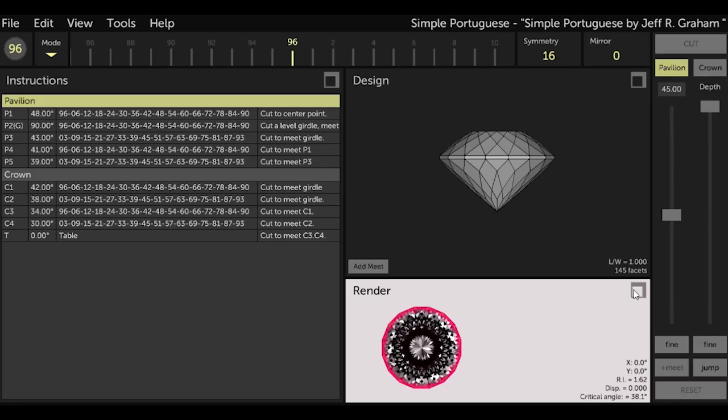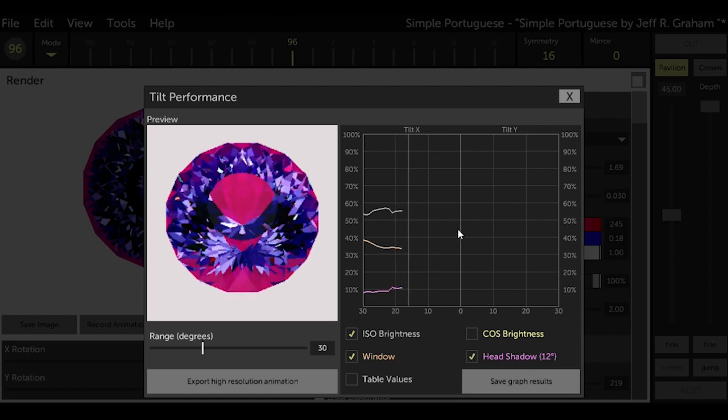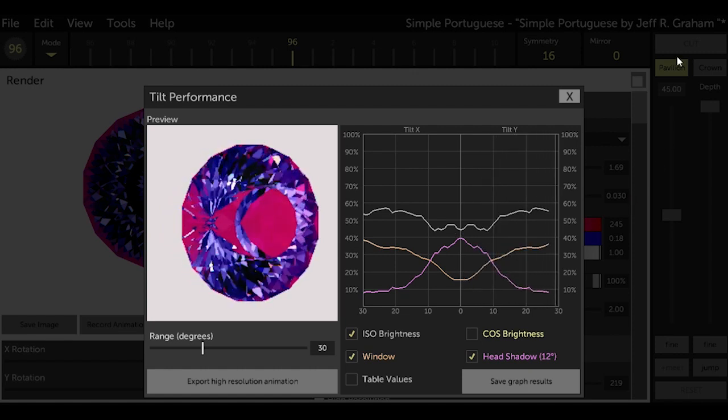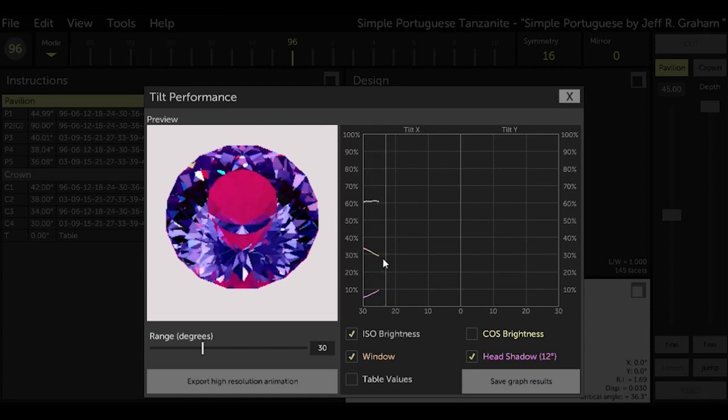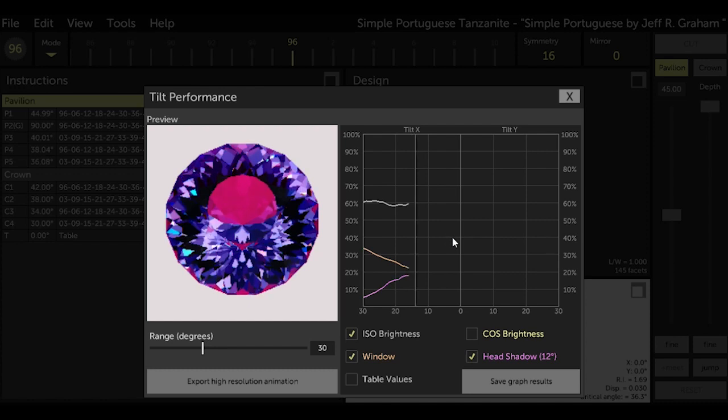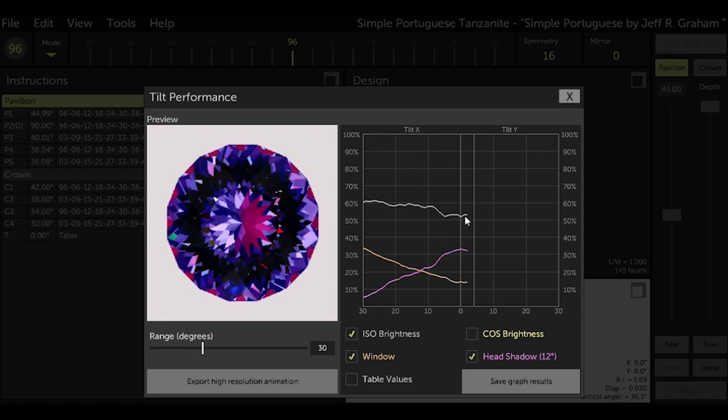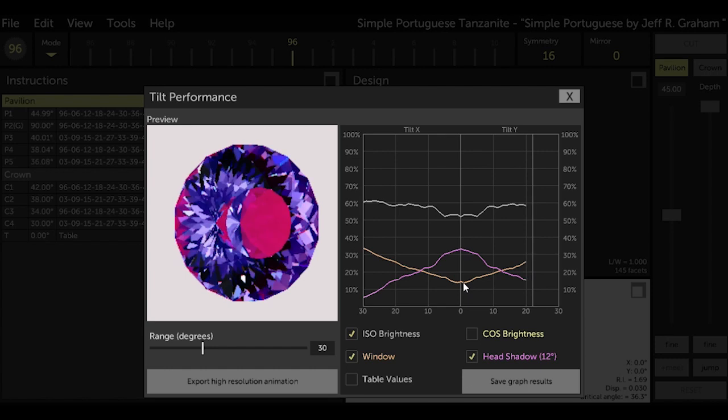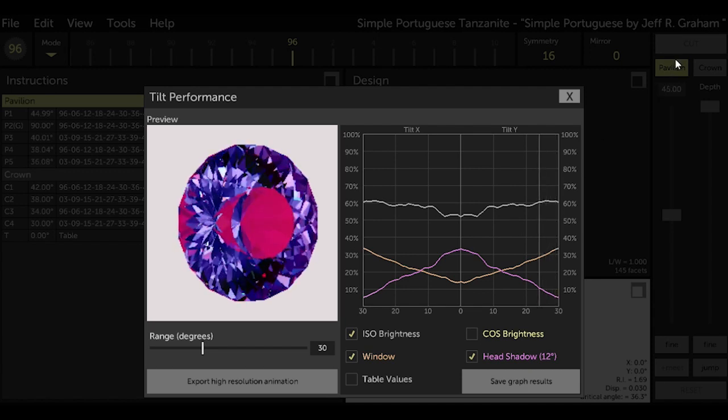The basic, simple Portuguese design gives just over 40% brightness and 20% window. I used the render feature and changed the material in GCS to Tanzanite. The design now gives 45% brightness and 15% window in the face-up position. Using the manual optimizer feature, I see that we can improve performance quite a bit by just reducing the angle of the facets on the pavilion. The brightness improves from about 45% to about 55% and windowing remains at 15%.